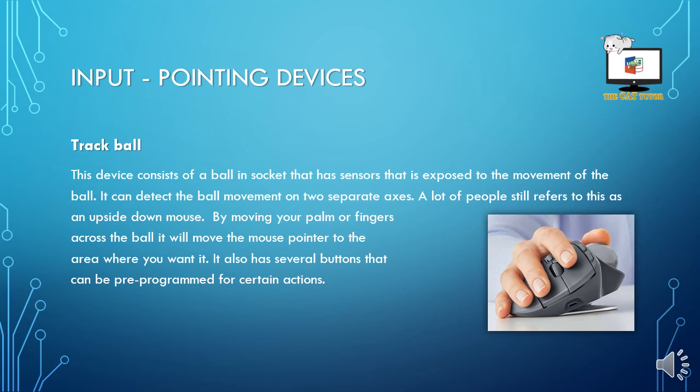Trackballs, sometimes referred to as an upside-down mouse, are a literal ball that can be attached to what looks like a mouse, or can be on its own. It's a little ball with sensors exposed to any movement. If you move your hand up while touching the ball, the cursor on your screen will go up; if you move it left or right, same goes. A lot of people call it an upside-down mouse because this is how mice worked originally — by moving your palm or finger across the ball at the bottom, the cursor moves in the corresponding direction.